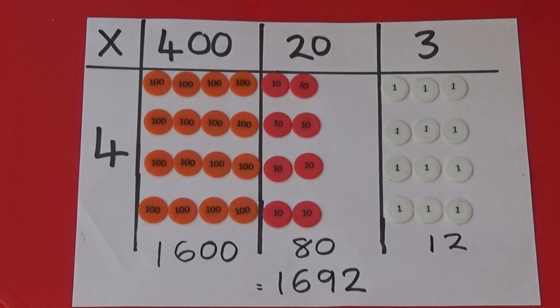In our last grid method video, we showed you how to use place value counters to work out 423 multiplied by 4. I've set out the counters as we did for that video. I'm now going to show you how to move from this method to column method.